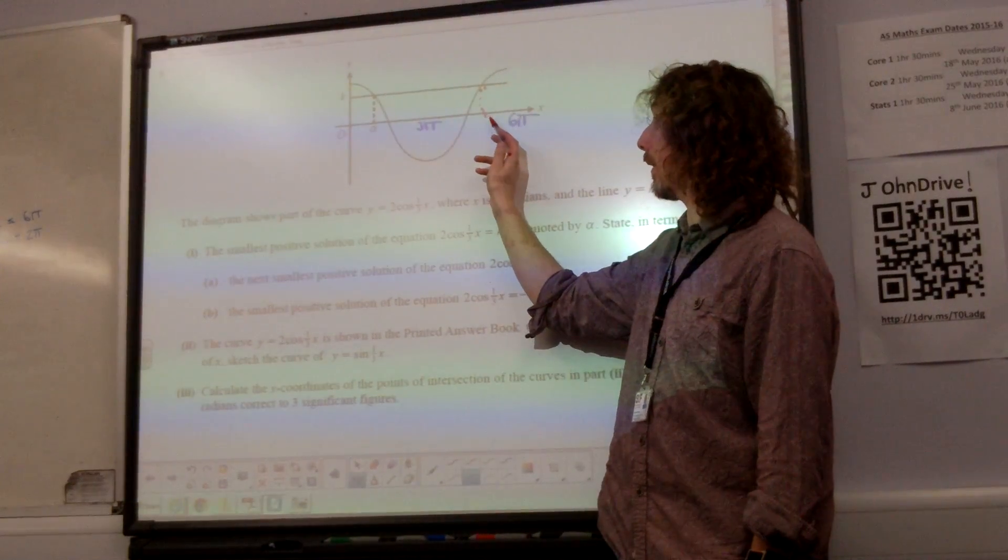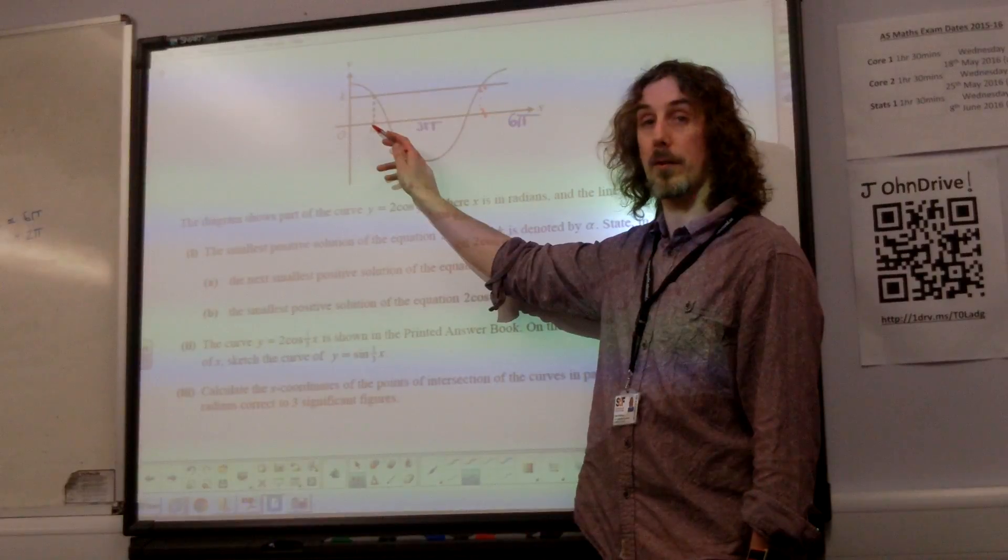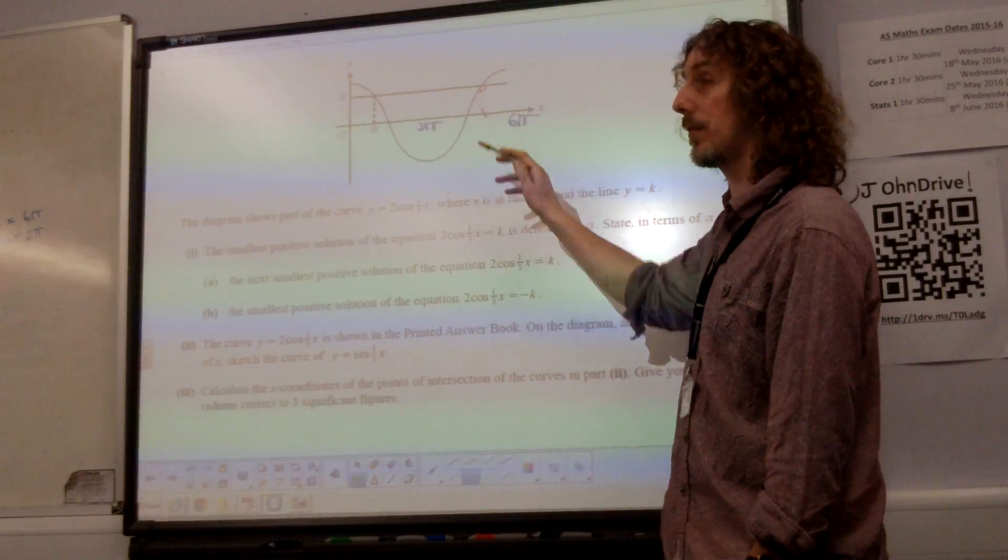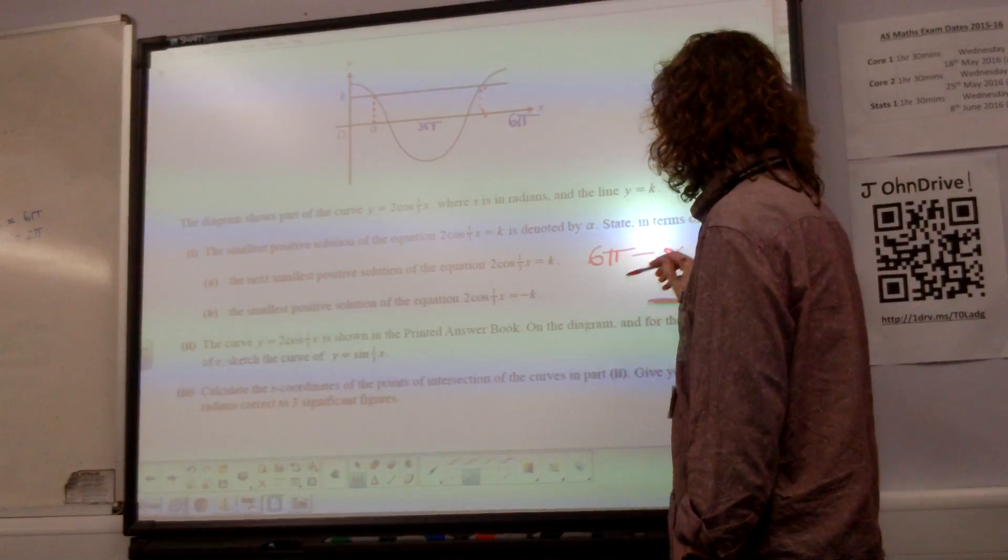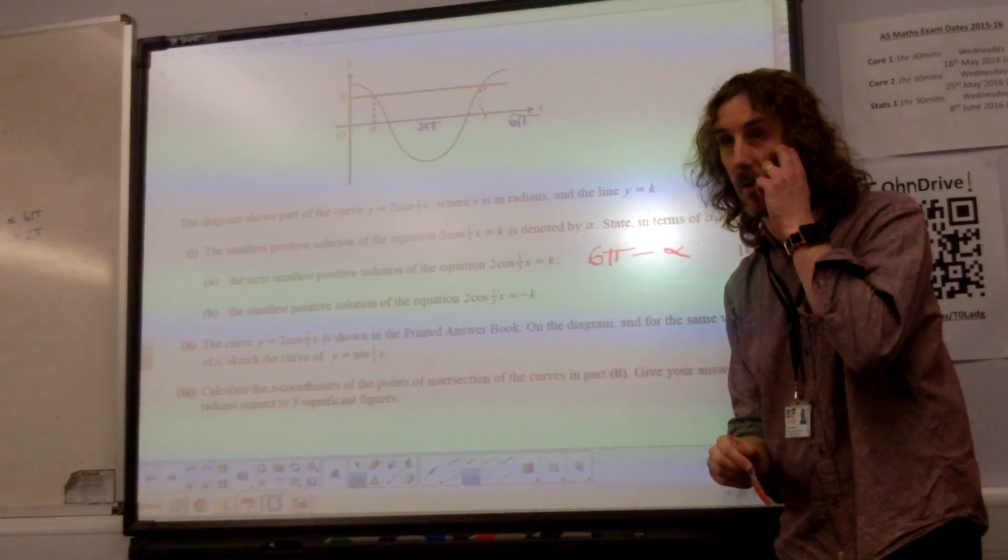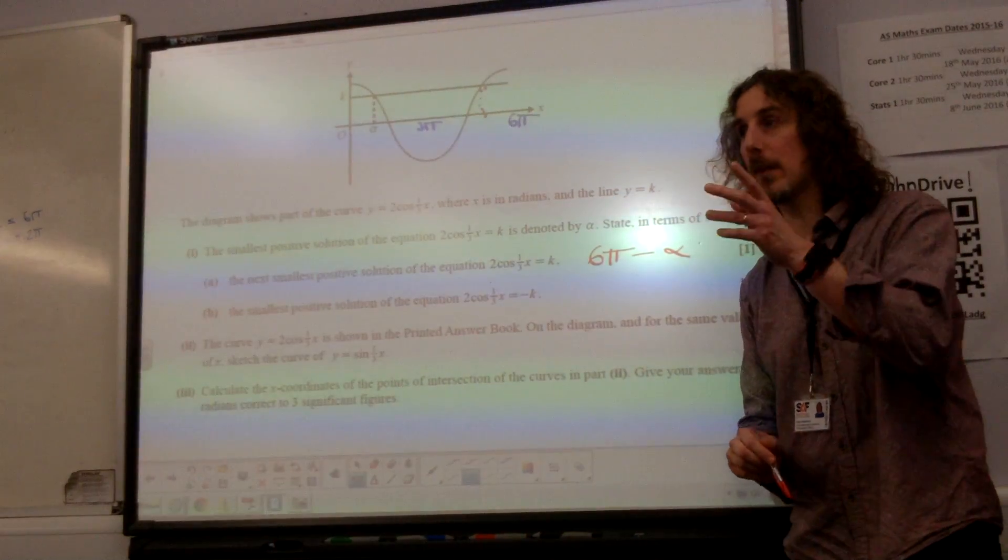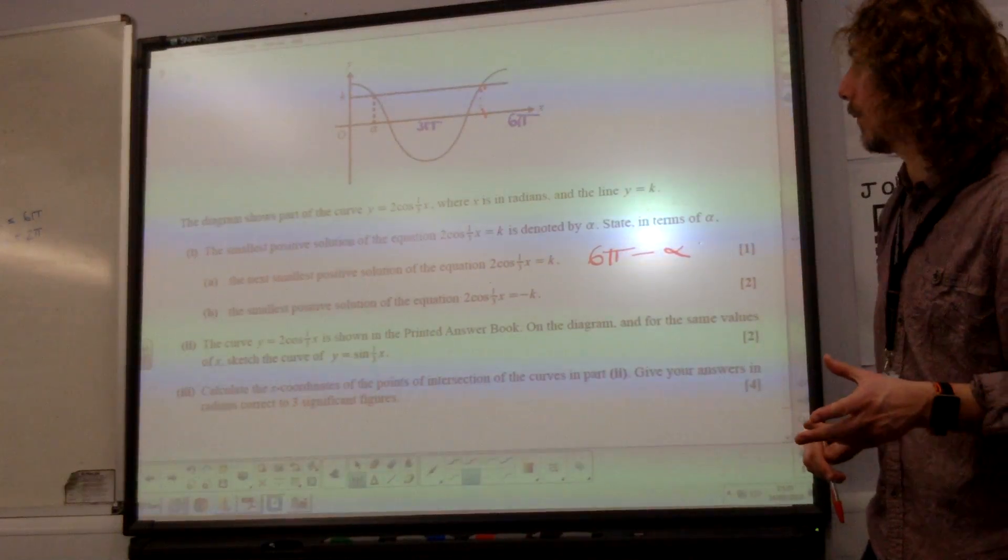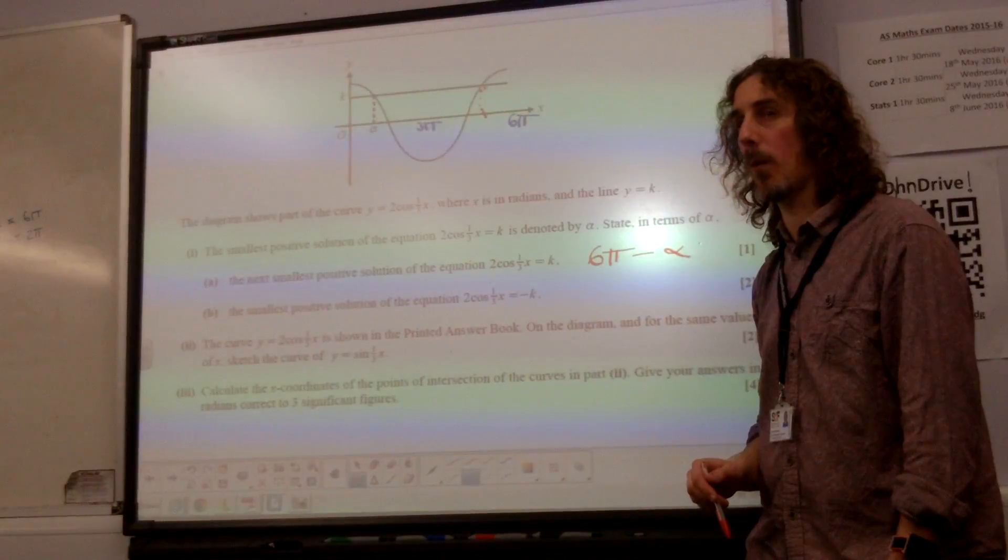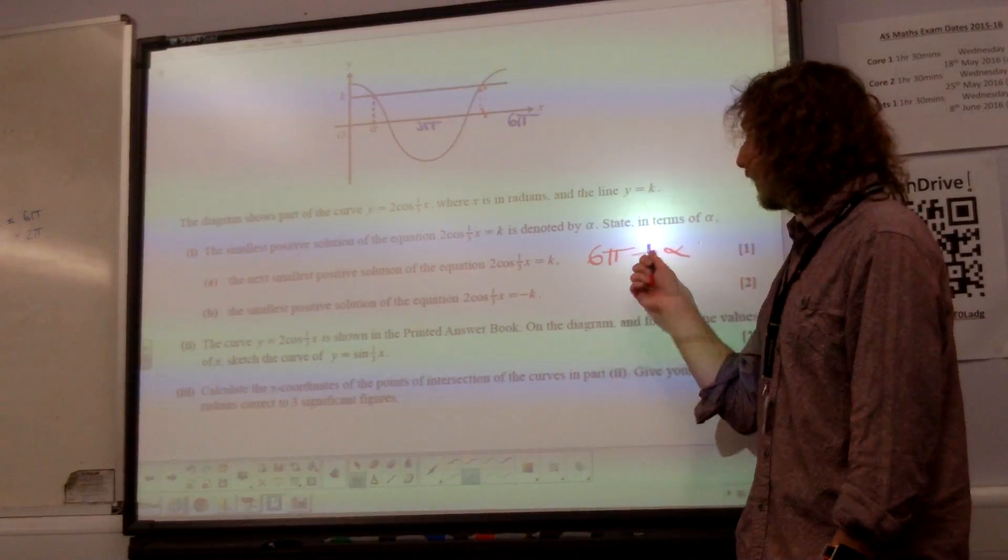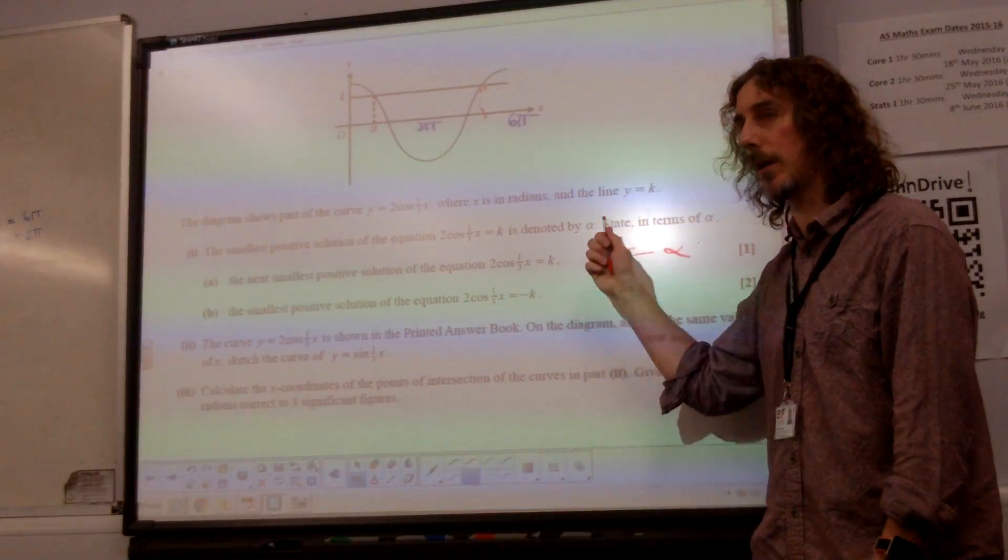So if that distance is alpha, it's alpha before 6 pi. So the answer is 6 pi minus alpha. They did actually give you the mark if you didn't spot that the question works in radians, and you wrote 1080 minus alpha, which would be what it would be if you wrote in degrees.